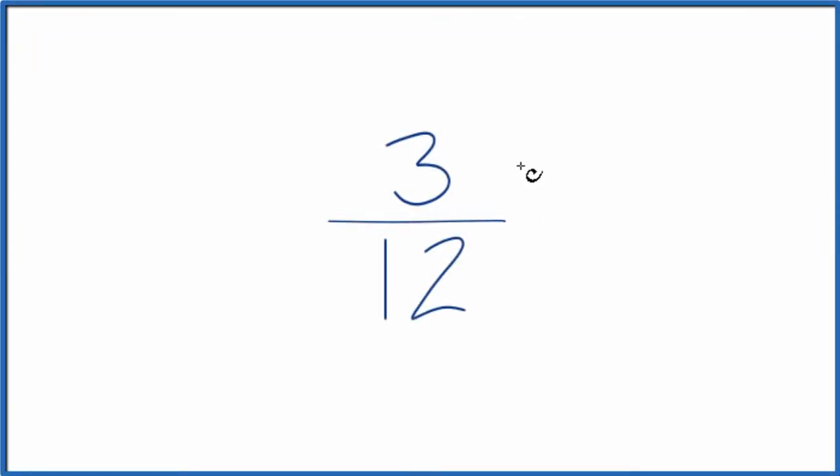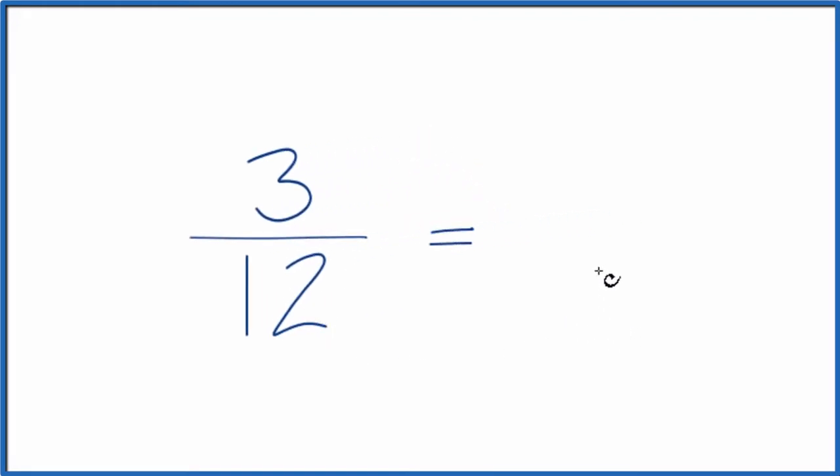Let's write three equivalent fractions for 3 twelfths. Here's how we'll do that. We're looking for another fraction that's equivalent, it's equal to 3 over 12. If you divide 3 over 12, you get the same decimal, just that we have a different numerator and denominator.